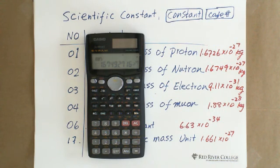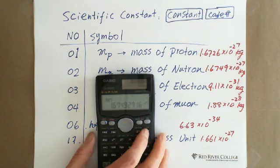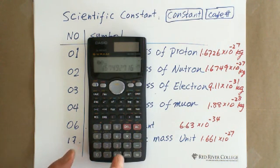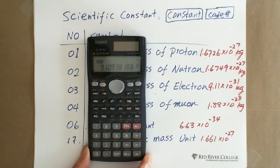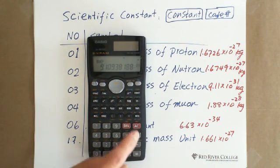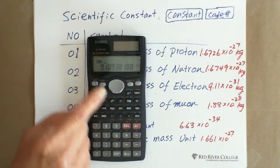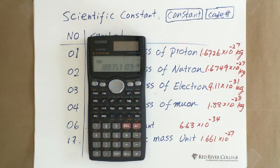A little bit different with proton — if we want to find the mass of electrons, we use constant 03, code number 03. It shows you 9.11 times 10 to the negative 31 exponent kilograms. If you want constant 04, which is mass of muon, it will show you 1.88 times 10 to the negative 28 exponent kilograms. Mass of muon is much greater than mass of electrons, so they have big energy.